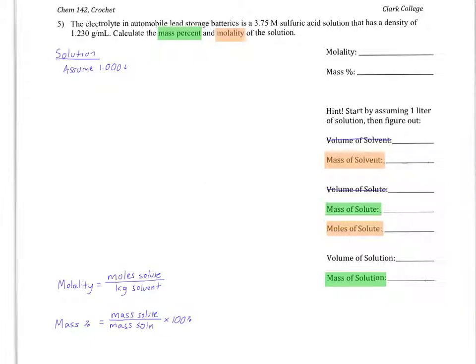Using the volume of solution and the density of solution, we can find the mass of solution. Density is grams per milliliter, so we'll start by converting one liter into milliliters, then using the density to convert from milliliters to grams. In this case, one liter of solution has a mass of 1,230 grams. I'll fill that in here for mass of solution.